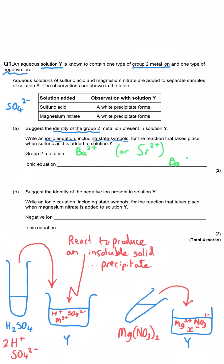Just saying barium won't be good enough — you need to say Ba²⁺ or Sr²⁺. For the ionic equation, I recommend starting with the product. When barium reacts with sulfate ions you make the BaSO₄ precipitate as a solid. The two ions that produce it are Ba²⁺ (aqueous) and SO₄²⁻ (aqueous). Barium is a group 2 metal so it carries a 2+ charge, and sulfate carries a 2− charge, so they combine in a one-to-one ratio.